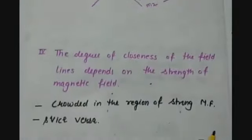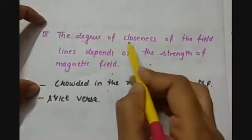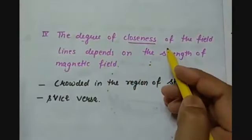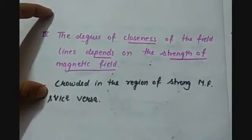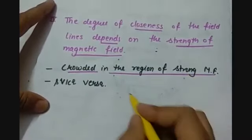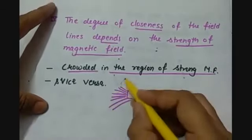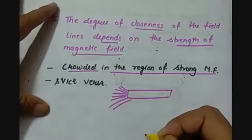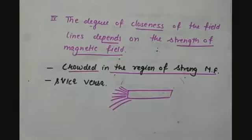The fourth important property of magnetic field lines depends on the strength of the magnetic field — that is, the degree of closeness or how crowded the magnetic field lines are. Magnetic field lines will be crowded in the region of strong magnetic field, as we have seen near the poles. They are farther apart at a distance from the bar magnet. So they are crowded in a region of strong magnetic field and diverged in a region of weak magnetic field.